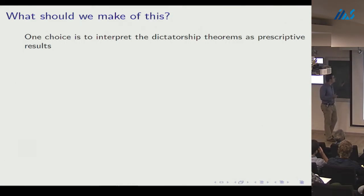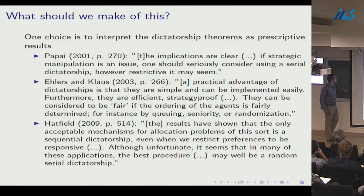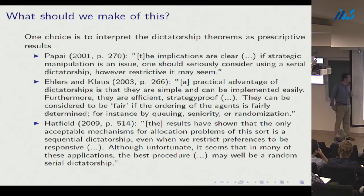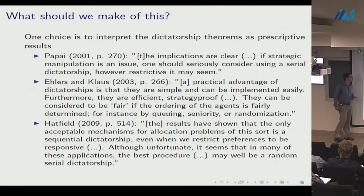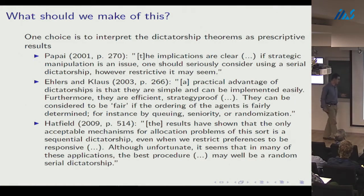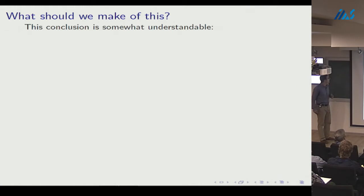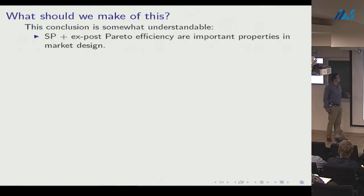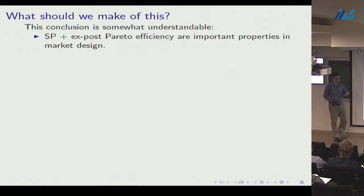Several dictatorship theorem papers conclude: 'implications are clear — if strategic manipulation is an issue, one should seriously consider using a serial dictatorship, however restrictive it may seem; the best procedure may well be a random serial dictatorship.' This conclusion is somewhat understandable: strategy-proofness and ex post Pareto efficiency are central properties in market design, especially in the theory of single-unit assignment and top trading cycles.